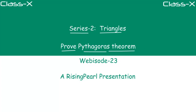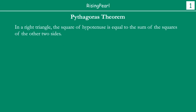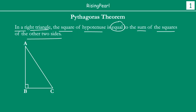Now let's look at what is Pythagoras Theorem. You know from your earlier classes that Pythagoras Theorem is nothing but: in any right angle triangle, the square of the hypotenuse is equal to the sum of squares of the other two sides. A right angle triangle is one where one of the three angles must be 90 degrees.